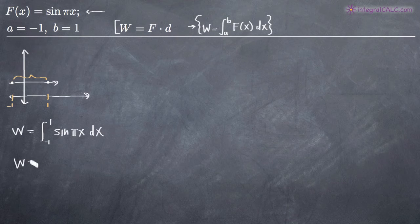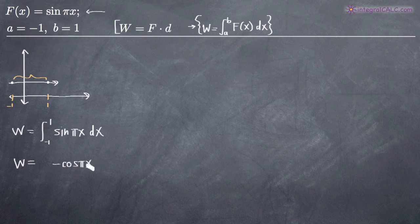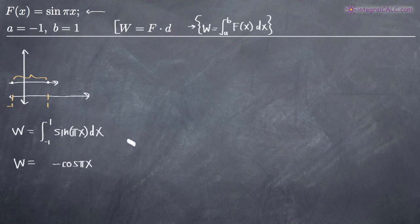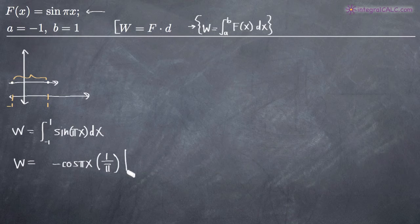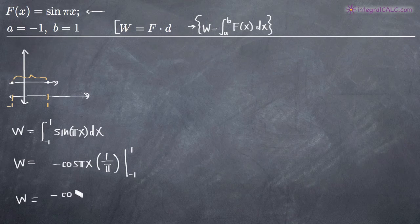This just becomes a simple integral problem. We know that the integral of sine of x is negative cosine of x. So we have negative cosine of pi x, but we need to use the chain rule here because we have pi x inside our sine function. When we integrate, we divide by the derivative of pi x, which is simply pi — that's the same as multiplying by 1 over pi. So our antiderivative is negative cosine of pi x divided by pi, evaluated on the range negative one to positive one.